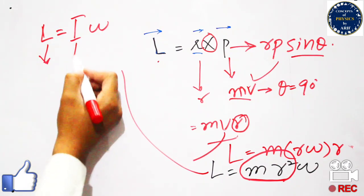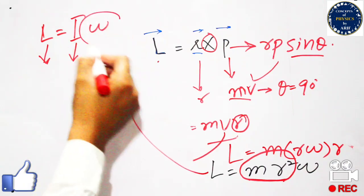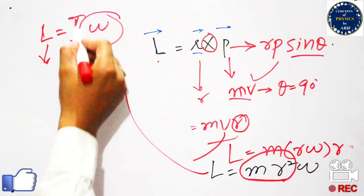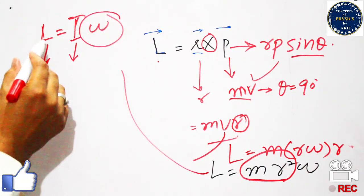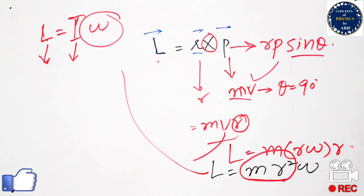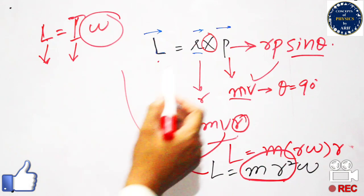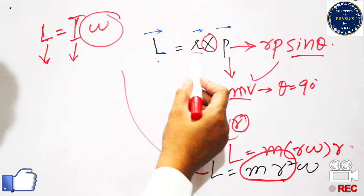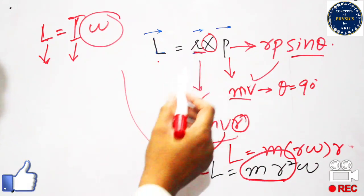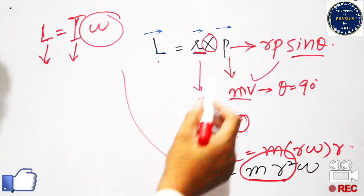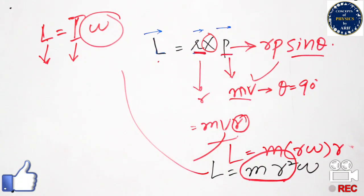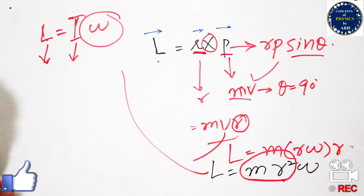So L equals I times omega means a body moving in angular motion with moment of inertia I and angular velocity omega has angular momentum L. Equivalently, angular momentum is the cross product of position vector r and linear momentum p.